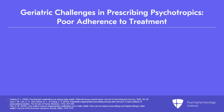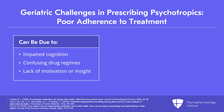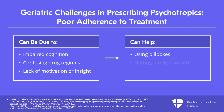Other geriatric challenges in prescribing can include poor adherence to treatment regimens. This can be because of impaired cognition, confusing drug regimens, lack of motivation, or a lack of insight into the need to use treatment. Setting up things like pillboxes and encouraging family to be involved in administration can be important.